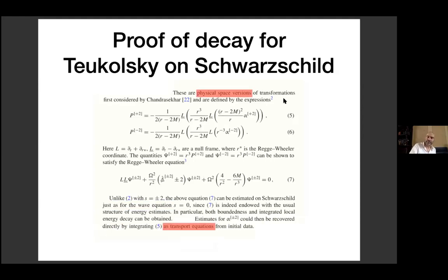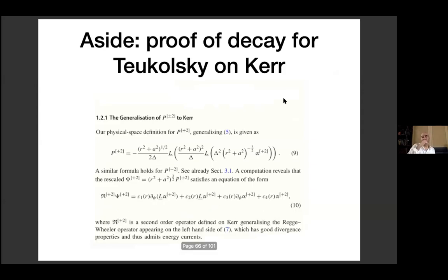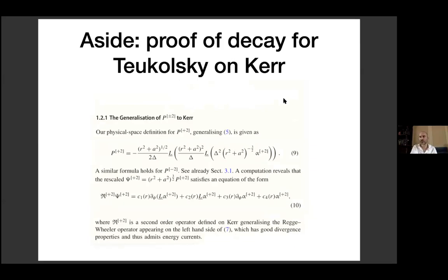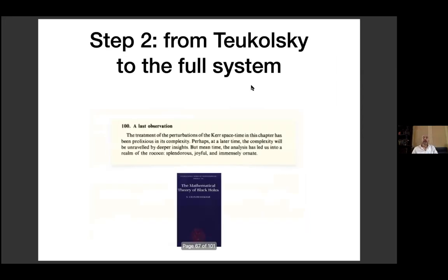Even though you don't have exact Chandrasekhar transformations in Kerr — Chandrasekhar tried very hard to find exact versions — if you do the physical space versions of these transformations you get error terms. But the approach is robust to the presence of these error terms, which allows you to handle the small-a case relatively easily and the complete sub-extremal case with more work.